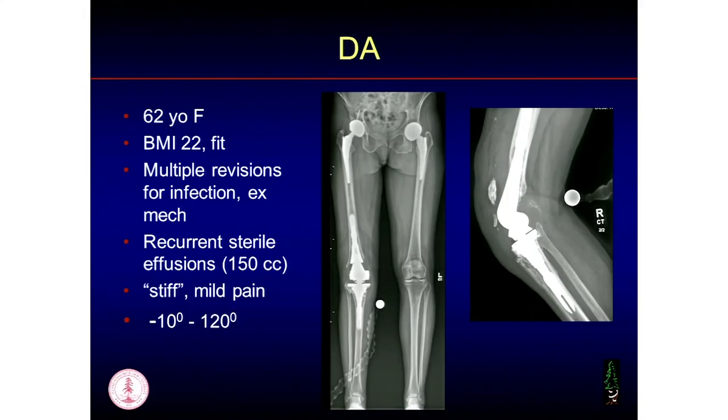I had a patient like this where I was convinced it was crazy. Finally she wore me down and I took her back — the stem and tray had mildly dissociated from the sleeve. The Morse taper had broken. When I went in there, I expected to find nothing, but as soon as I opened the arthrotomy there was dark green fluid from metal-on-metal wear. She had been right all along — she was having pain from that and had recurrent effusions, never infected. I had aspirated her, but it didn't look that bad. The cause of her problem was the dissociated Morse taper. This does have a bunch of modular connections, and 150 cc is a really big effusion — the normal knee holds about 60 cc.